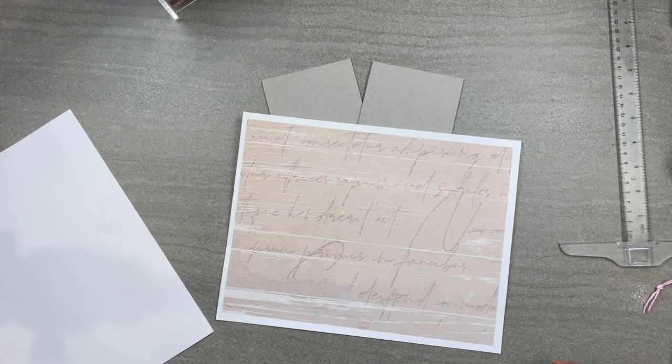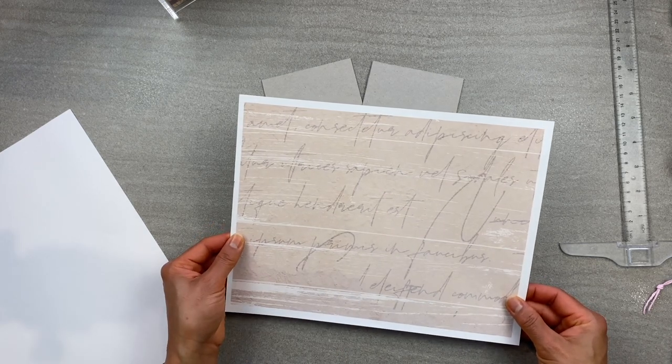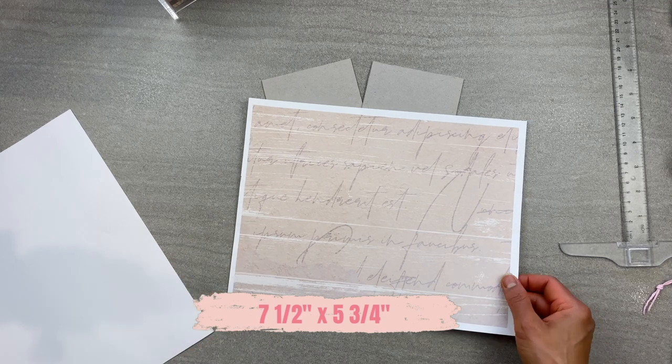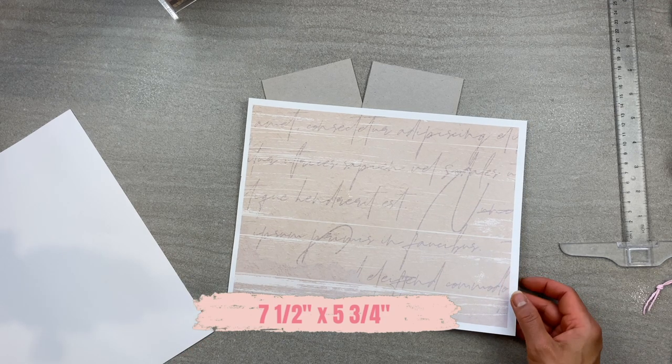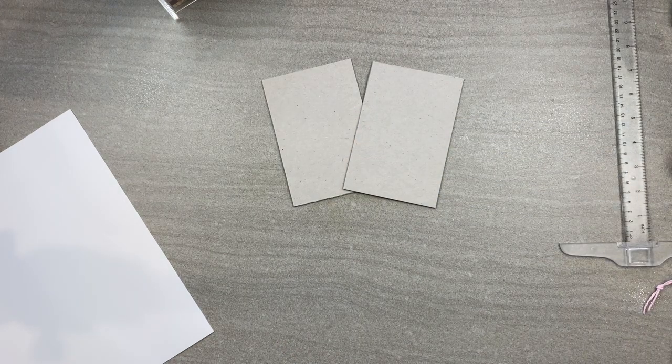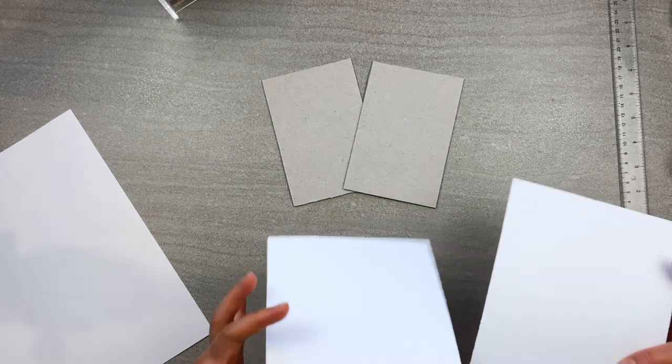The next thing you want to do is take the cover sheet or any decorative sheet of paper and cut it down to seven and a half inches by five and three quarters of an inch. This will be your cover sheet for the mini journal covers and you'll need two of these.